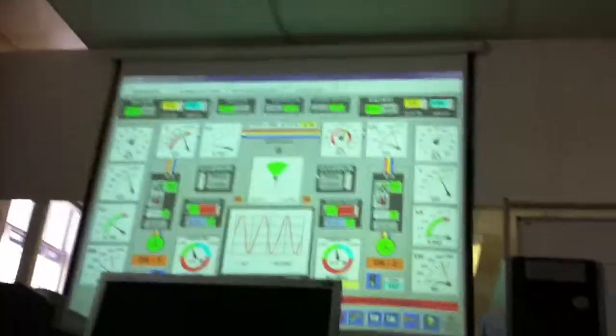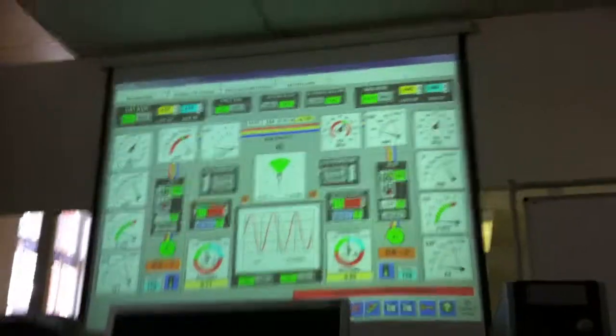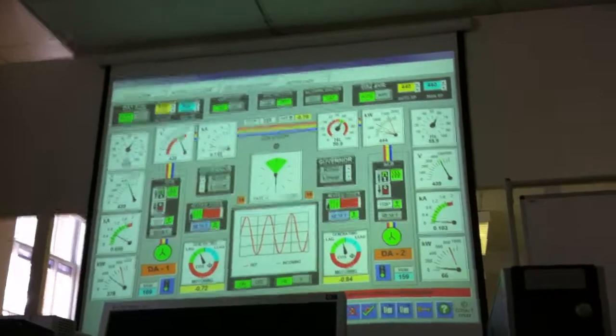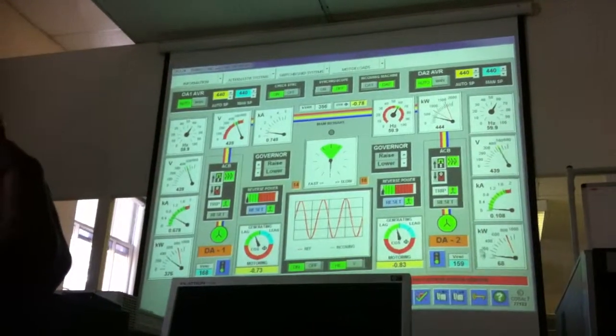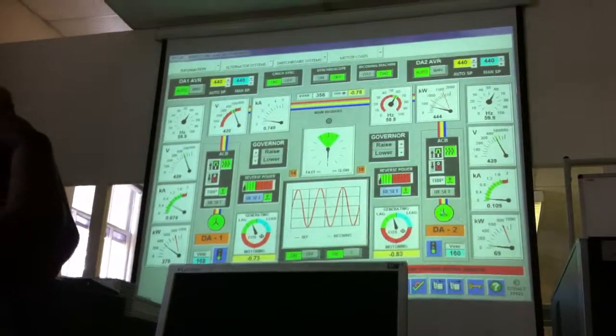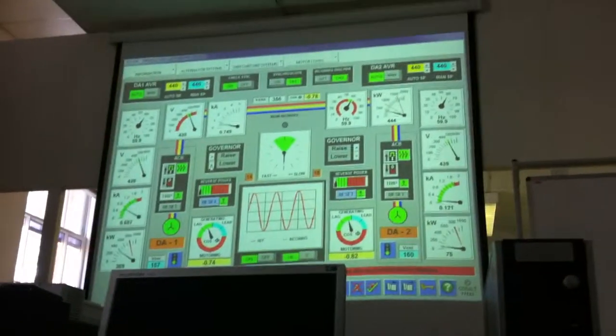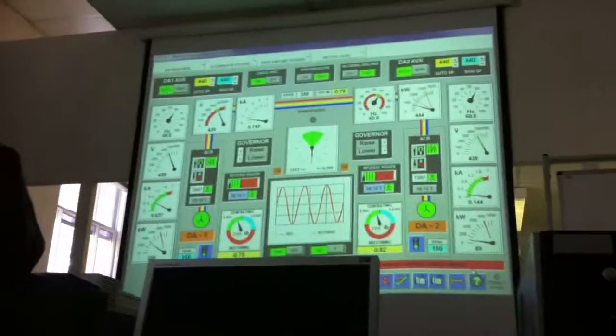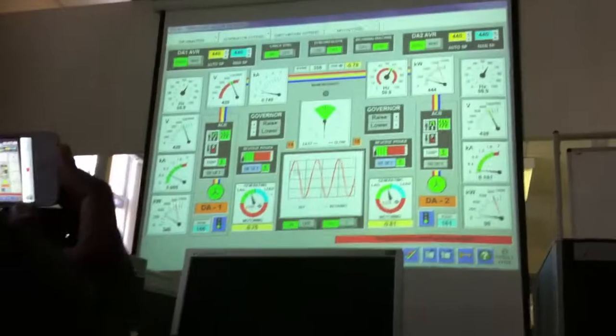Now the two alternators are now synchronized and in parallel. The next operation is load balancing or load sharing. So you need to explain now that we need to transfer the load from here over to here. And to do this, we bring the speed of number 2 up and bring the speed of number 1 down. Make sure the load comes across. And at the same time, watching that frequency. Because that may change as well.